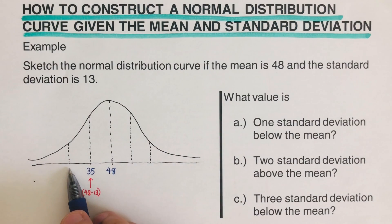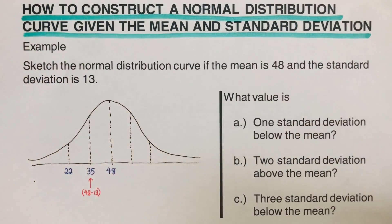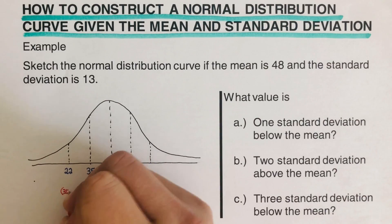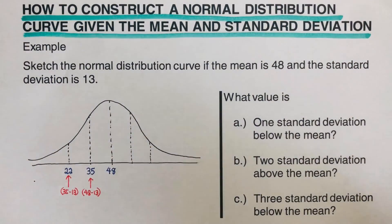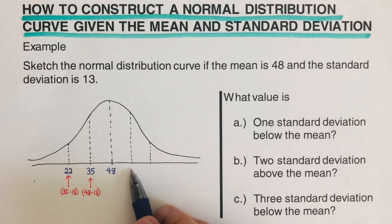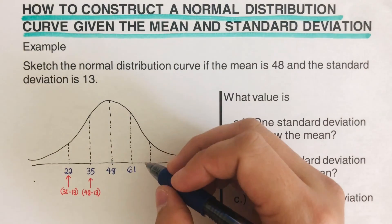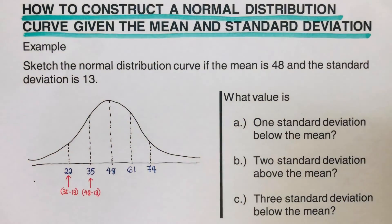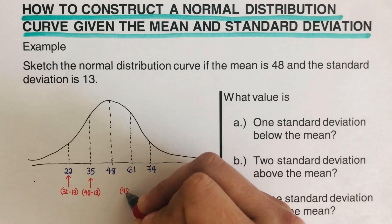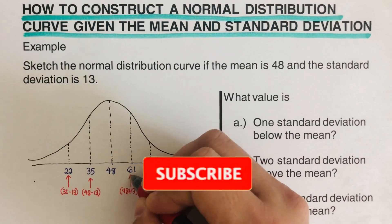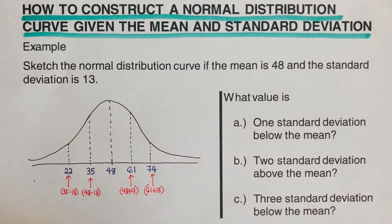Two standard deviations below the mean is 35 minus 13, which gives us 22. Going to the right, one standard deviation above the mean is 48 plus 13, which equals 61. Two standard deviations above the mean is 61 plus 13, which equals 74.